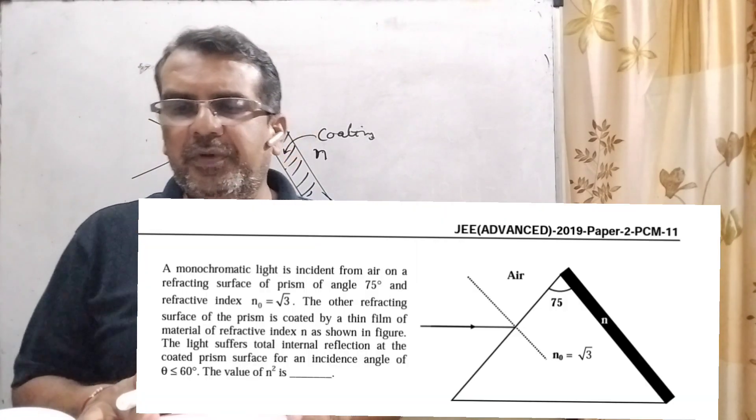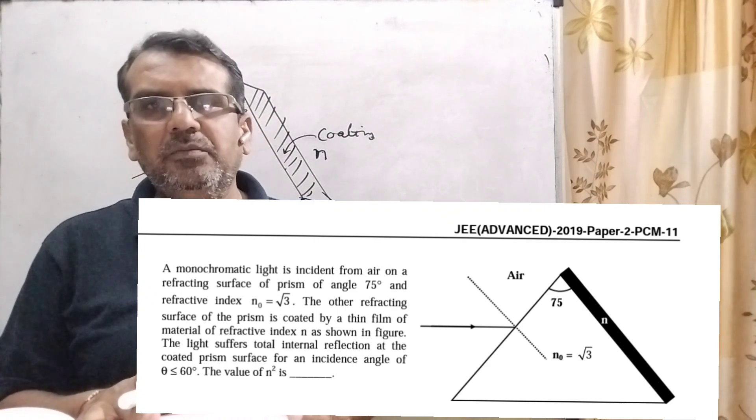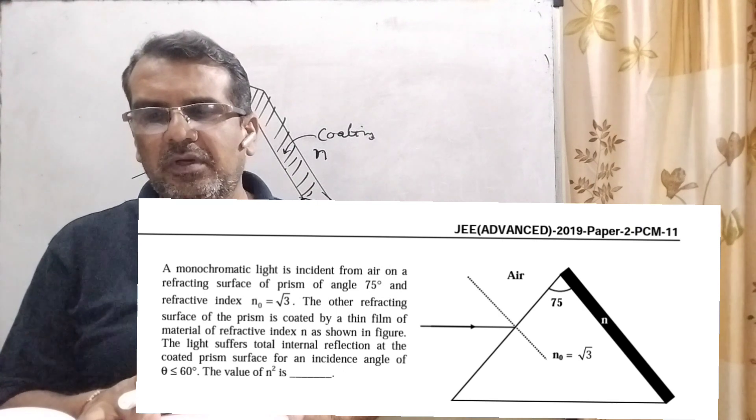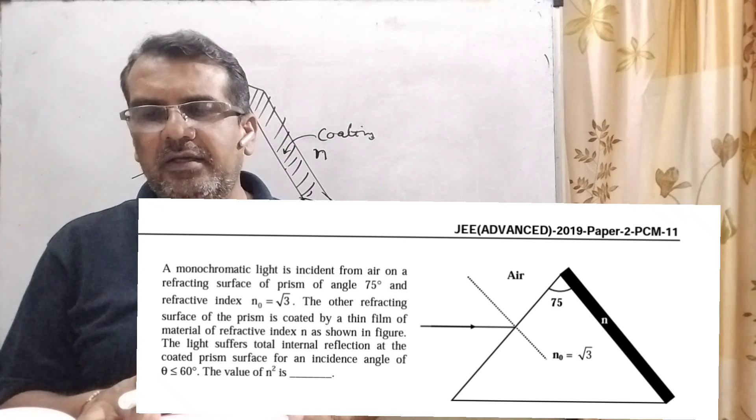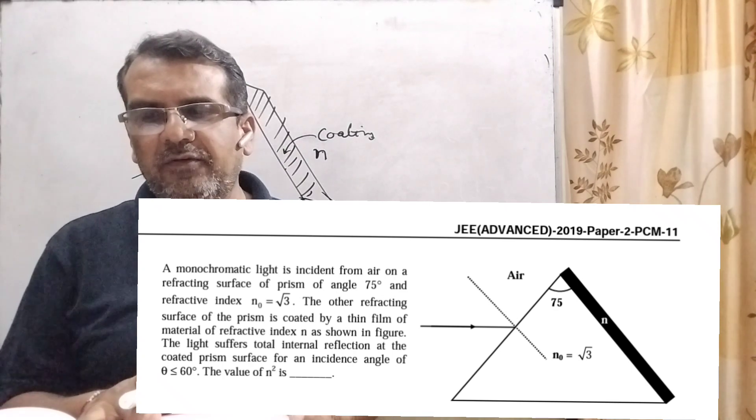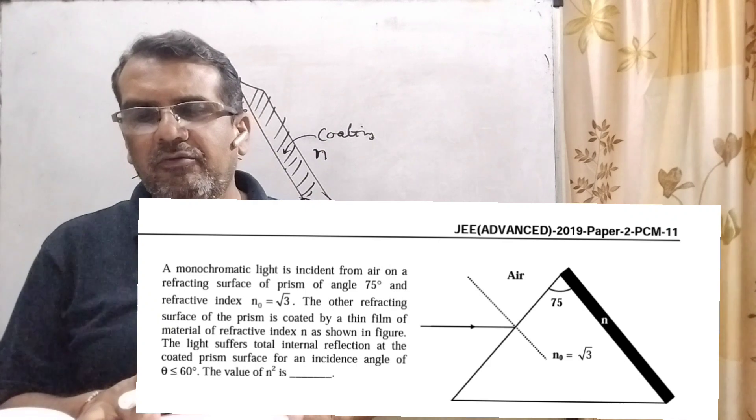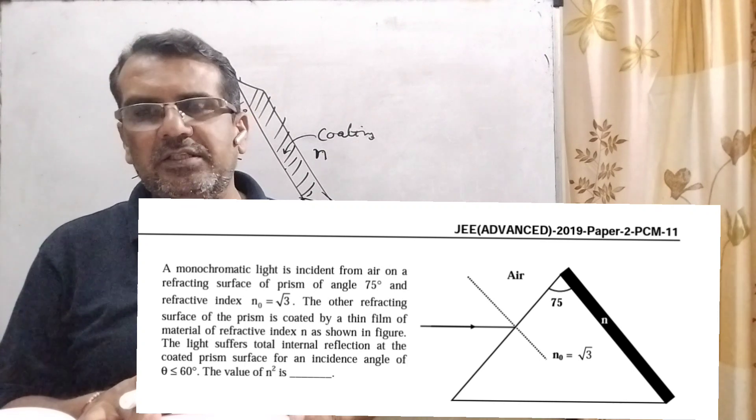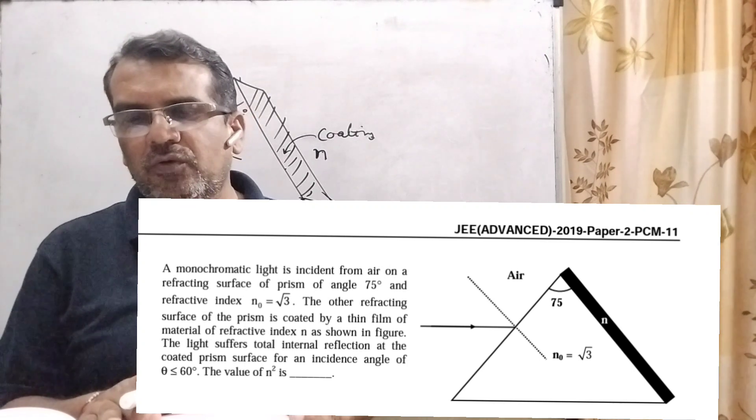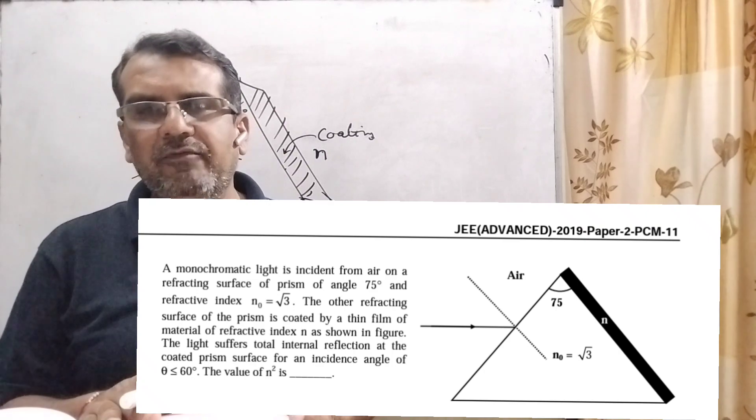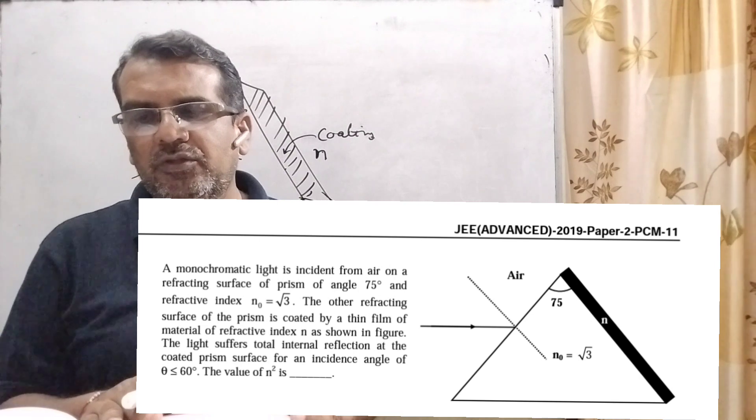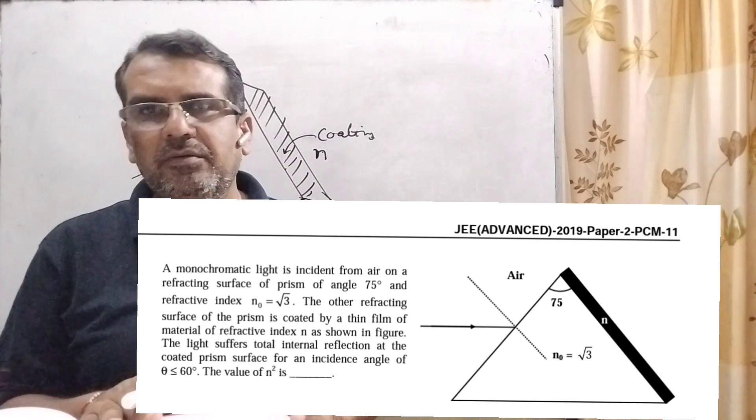Now here is the question. A prism is shown in the figure with angle 75 degrees and refractive index root 3. A light ray incidents on a surface at incident angle theta. Other face is coated with a medium of refractive index n. For theta less than or equal to 60 degrees, ray suffers total internal reflection. Find the value of n square. This question is from JEE Advanced 2019, paper 2.